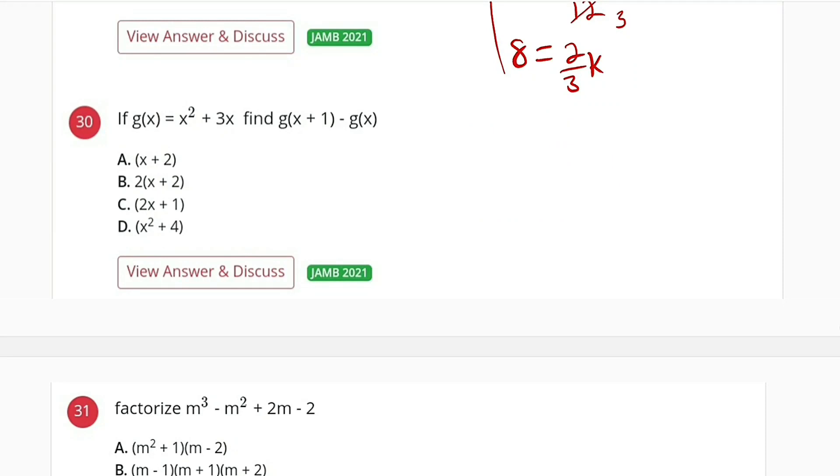Question number 30, we are given that g of x is equal to x squared plus 3x. We are asked to find g of x plus 1 minus g of x.